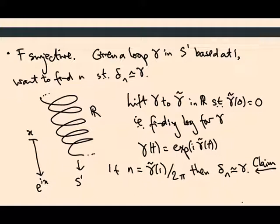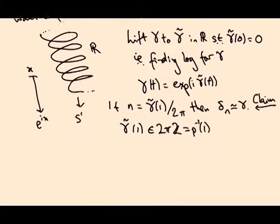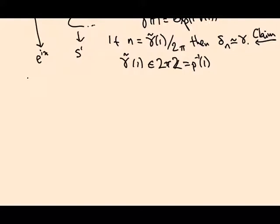Right. What's this? Well gamma tilde of 1 is in the set 2 pi times the integers because this is p inverse of 1 and gamma is a loop. So that's giving me an integer.